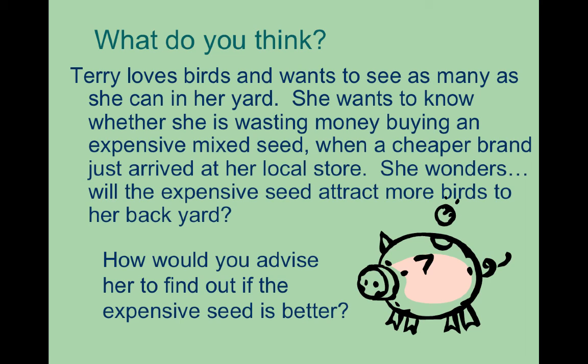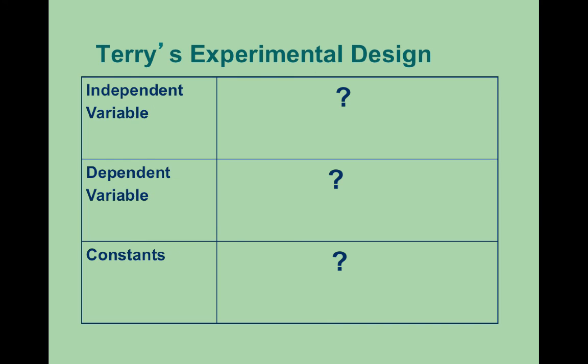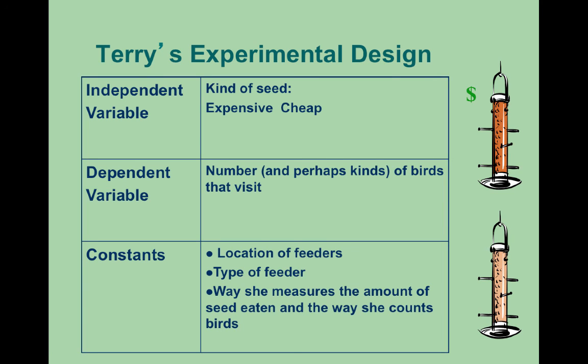Let's identify the variables in this experiment. Terry loves birds and wants to know whether expensive bird seed attracts more birds than a cheaper brand. The independent variable is the kind of seed Terry buys — expensive or cheap. The dependent variable, the responding variable, is the number and kinds of birds that visit. Her constants are everything else that needs to stay the same: location of the feeders, type of feeders, the way she measures the amount of seed, and the way she counts the birds.